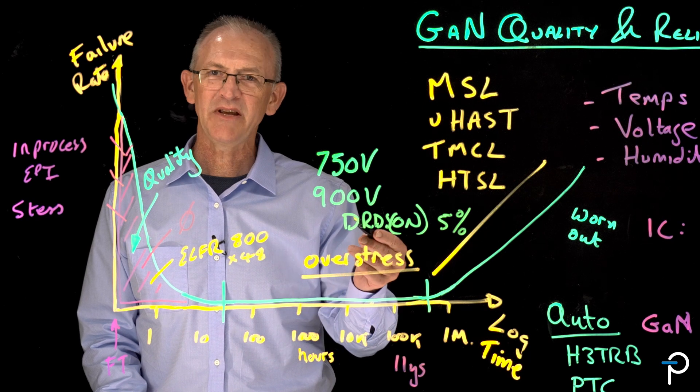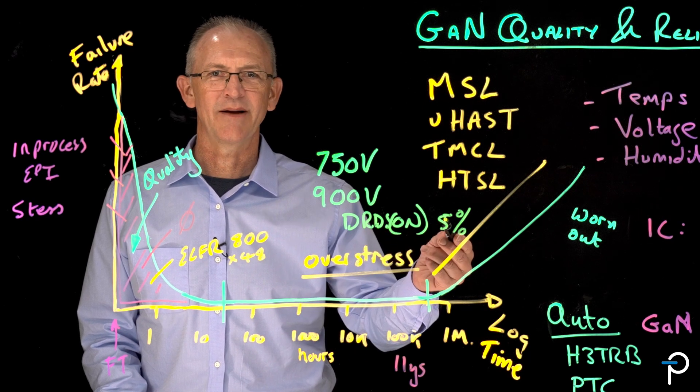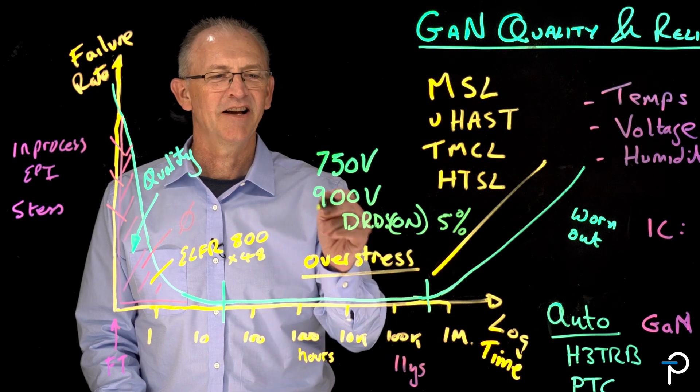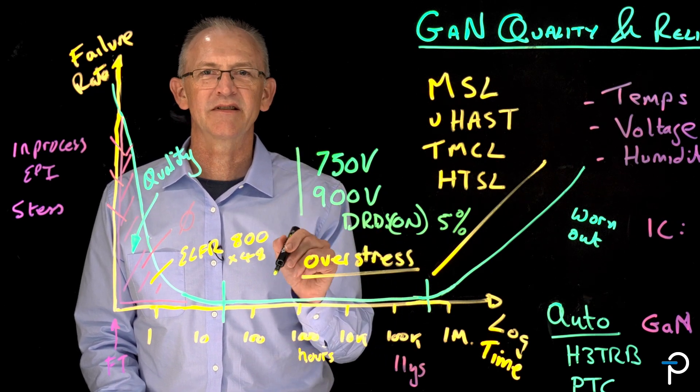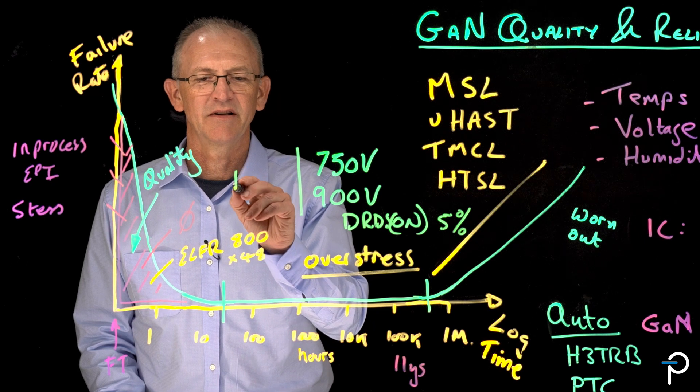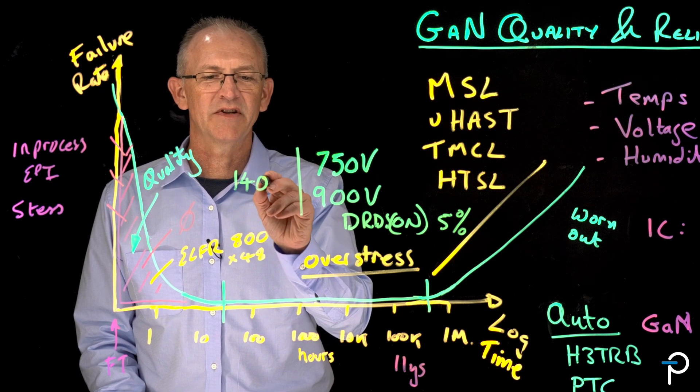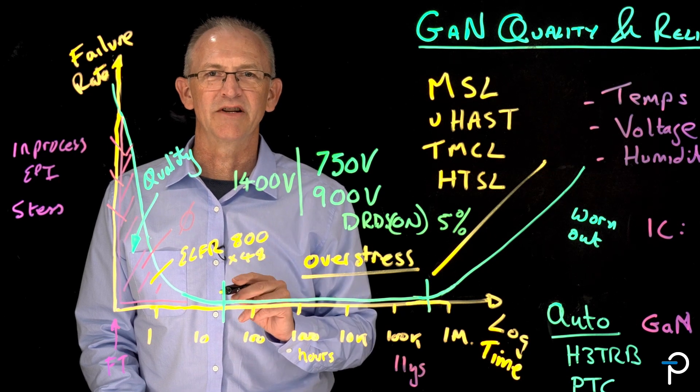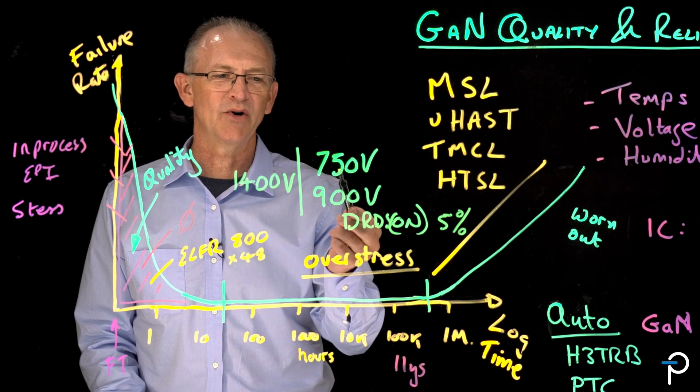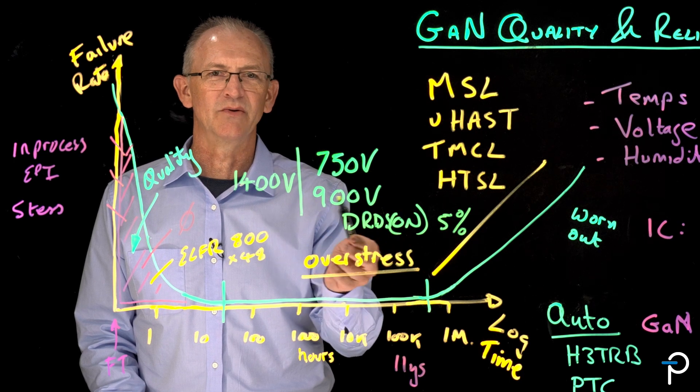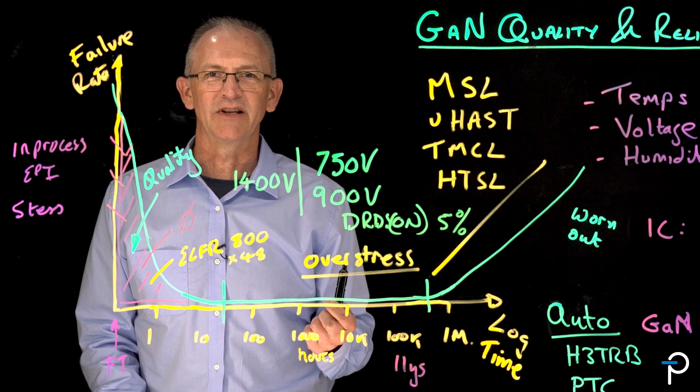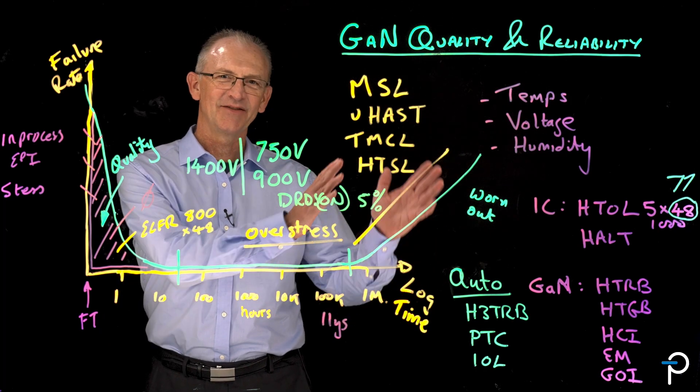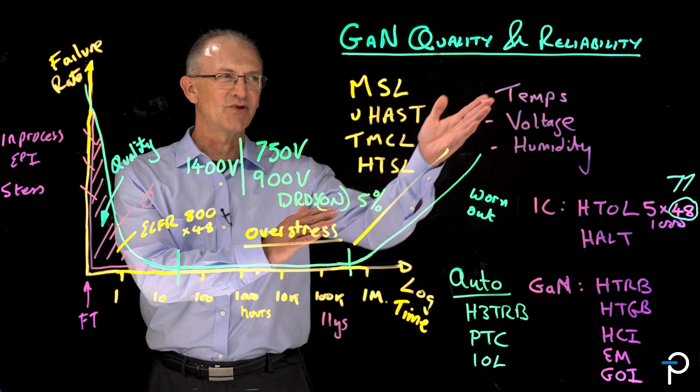So if our BV is being set by dynamic RDS on, where does it break down? There's got to be a number. And it turns out that for both of these GaN families, the actual physical breakdown is somewhere around 1400 volts. So there's a masses of margin with respect to the datasheet BV limit.